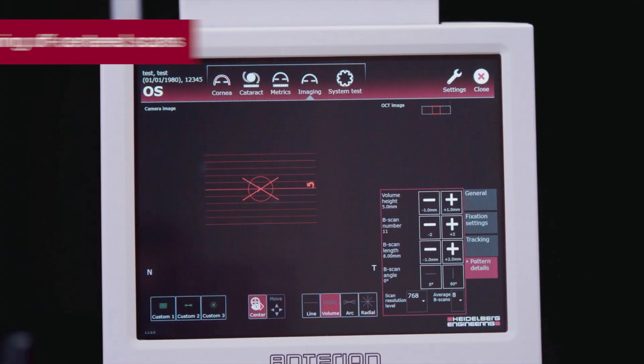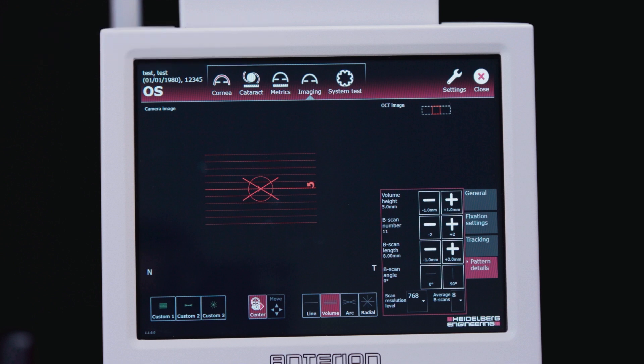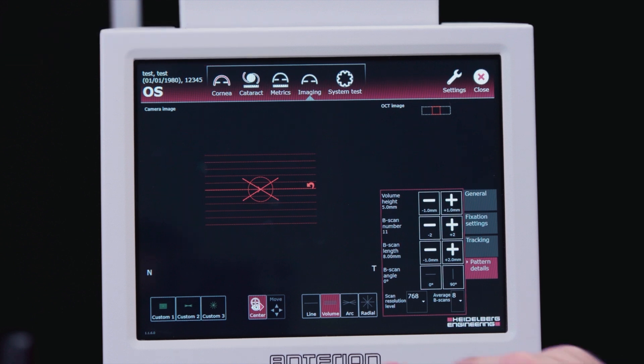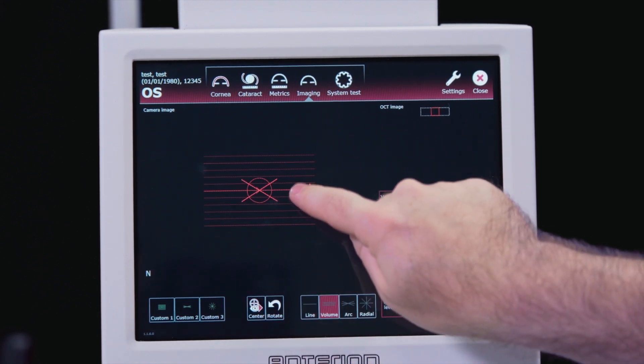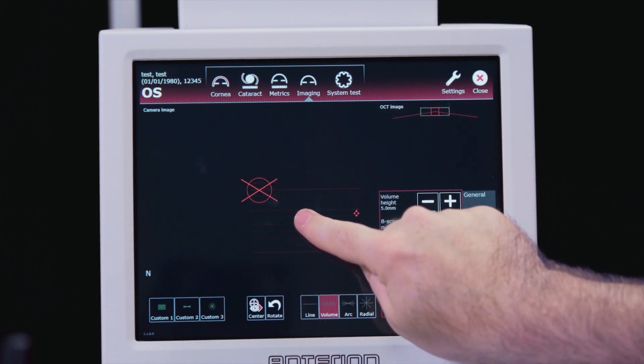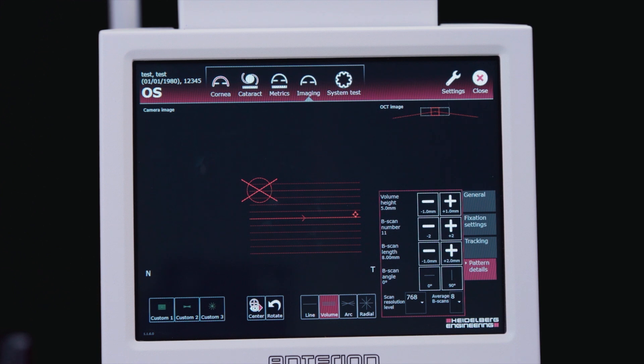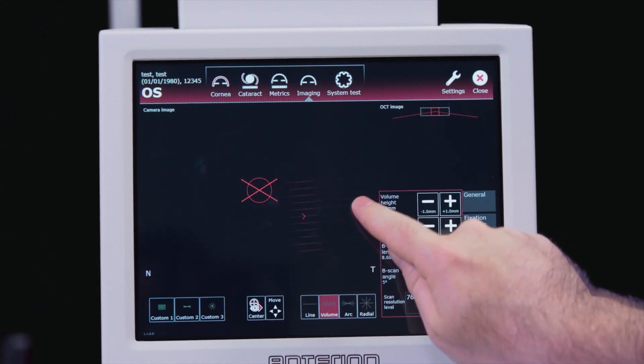By default, the scans are centered on the eye's corneal vertex. To reposition for an off-centered scan, press the center button to deactivate the center tracking. We can then acquire images at an off-center position. You can also rotate or move the pattern with the rotate button.